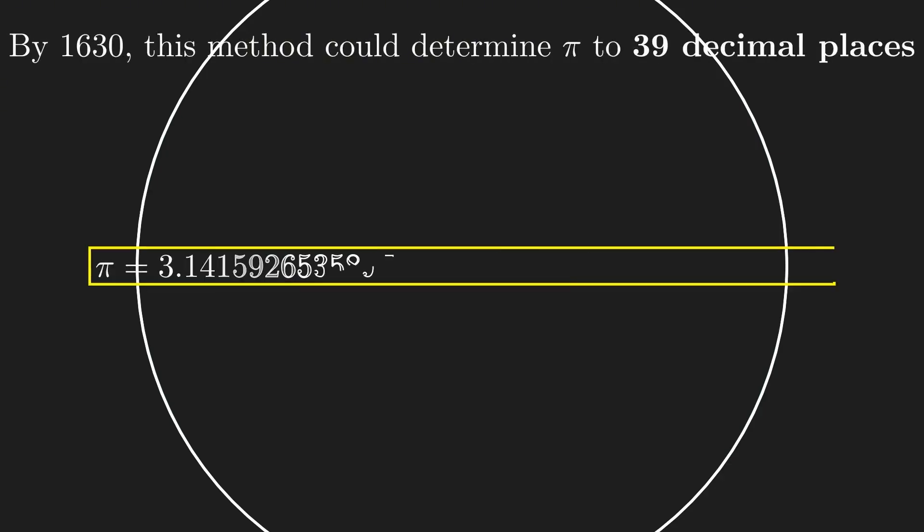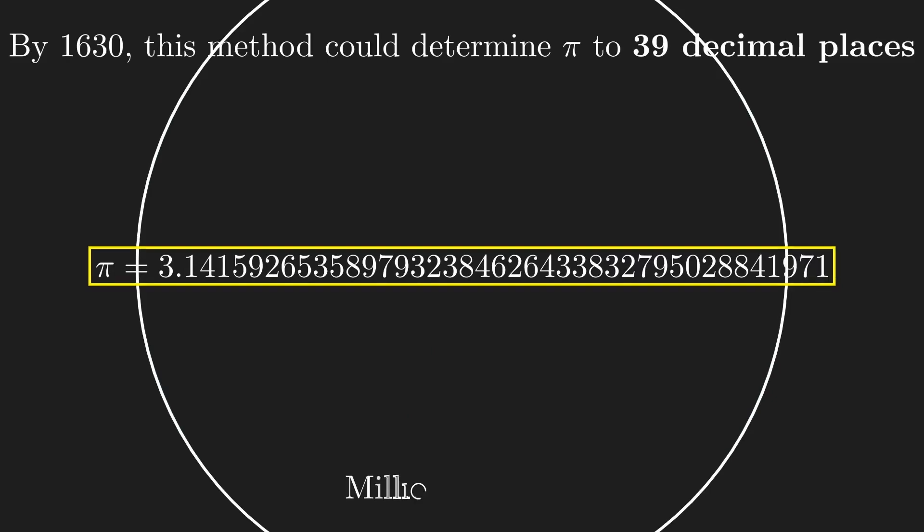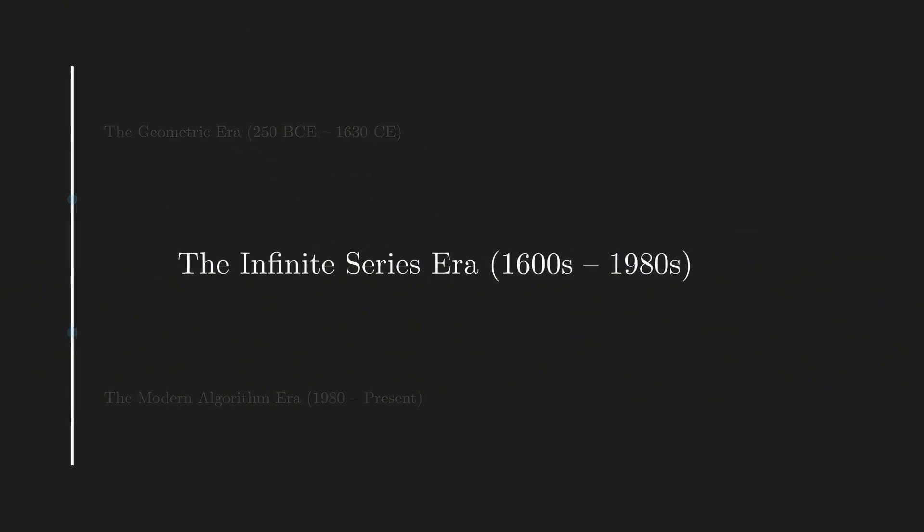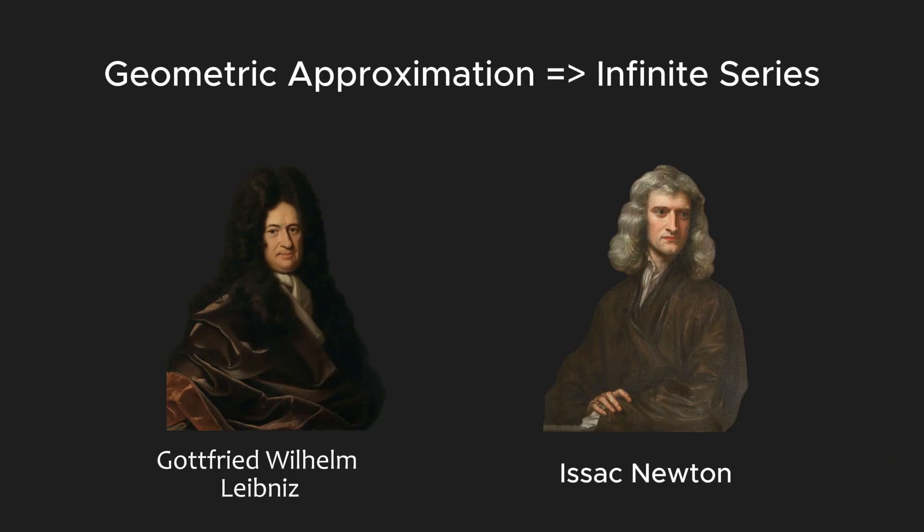Even by 1630s, after centuries of refinement, the best polygon-based calculations could only determine Pi to 39 decimal places. And just to achieve that, polygon method required millions of sides. And this was inefficient and mathematicians needed a new approach. In 17th century, the discovery of calculus transformed how Pi was computed. Mathematicians replaced geometric approximations with infinite summations.